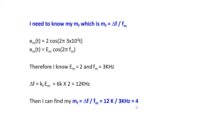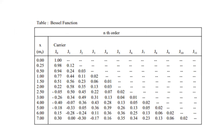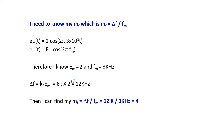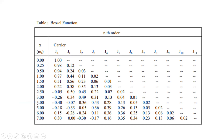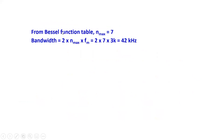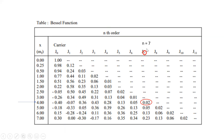This is the Bessel function table. Remember, this column here is the modulation index, or mf. I calculated mf equal to 4, so I look at the row where mf equals 4 and shift all the way to the right to find the last significant value, which is 0.02. Then I shift all the way up to find the column number, which is 7. So I conclude my n_max equals 7.